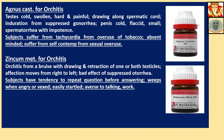Agnus Castus for Orchitis: Testis cold, swollen, hard, and painful. Drawing along spermatic cord. Induration from suppressed gonorrhea. Discharge is scanty, spermatorrhoea with impotence. Subjects suffer from tachycardia from overuse of tobacco. Absent-minded, suffering from self-contempt from sexual overuse.